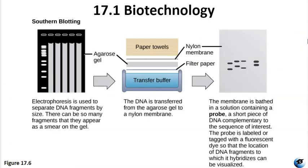Figure 17.6 gives an overview of southern blotting: DNA fragments are separated on a gel, transferred to a nylon membrane, then incubated with a probe complementary to the sequence of interest. Northern blotting is similar but looks at RNA instead of DNA. Western blotting uses this same fundamental technique but is used to detect proteins and antibodies.